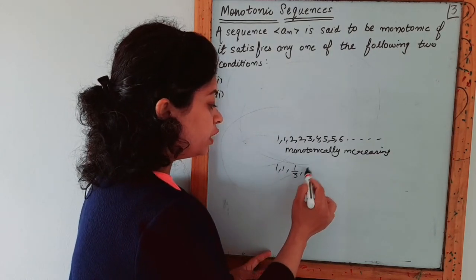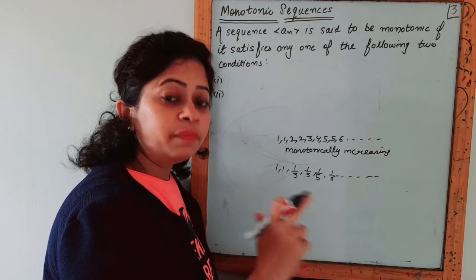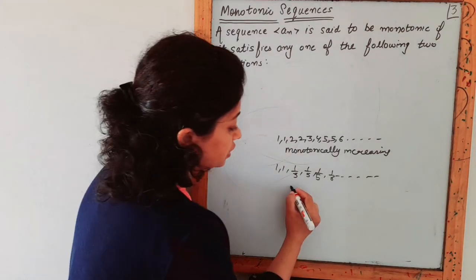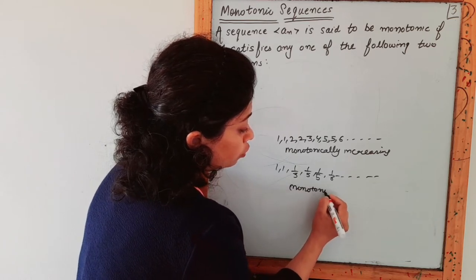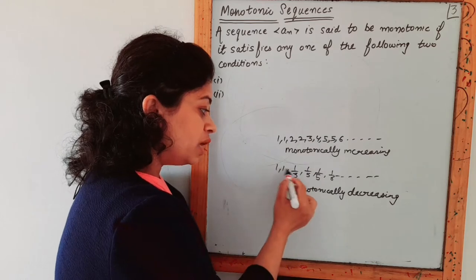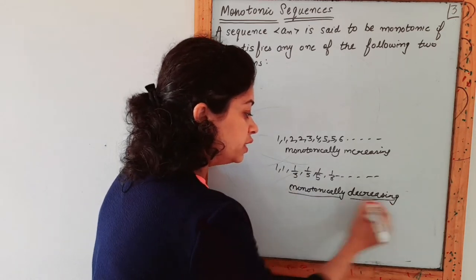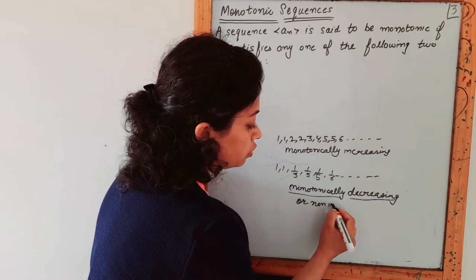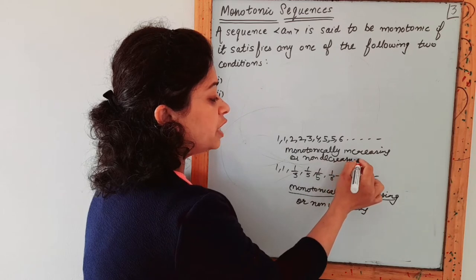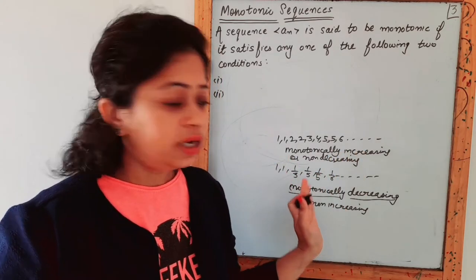Similarly, suppose a sequence is: 1, 1, 1/3, 1/5, 1/5, 1/6, and so on. This sequence always decreases or stays the same — it never increases. This is monotonically decreasing, or non-increasing. The first example was non-decreasing, or monotonically increasing.